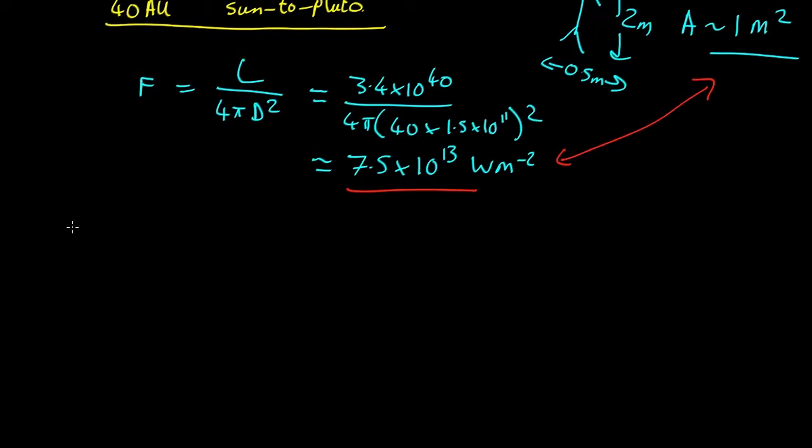The atom bomb that hit Hiroshima was a 12 kiloton bomb, which meant it had a total energy output of 5 by 10 to the 13 joules. So what that means is, if you were sitting out at Pluto's orbit around one of these quasars, the amount of energy that you'd be absorbing every second is more than the total energy from the Hiroshima atom bomb.